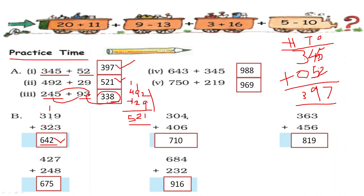Next problem: 6 and 4 make 10 — write 0, carry 1. 1 plus 0 is 1, then 4 plus 3 is 7. Then 6 and 3 make 9, 5 and 6 make 11 — carry 1. 3 plus 1 is 4, plus 4 is 8. Answer is 819. The remaining two sums you can practice at home.